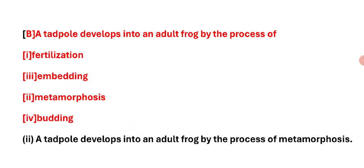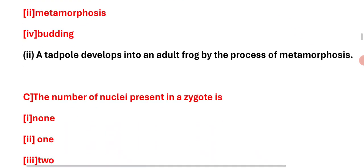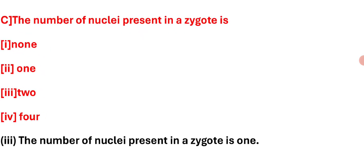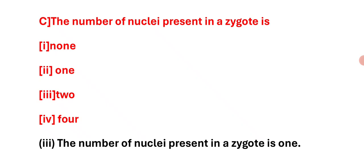Second question: A tadpole develops into an adult frog by the process of metamorphosis. Third question: The number of nuclei present in a zygote is — option A: none, option B: one, option C: two, option D: four. The number of nuclei present in the zygote is one. Option B is the right answer.